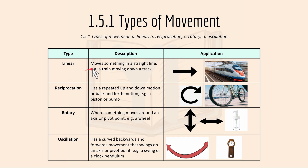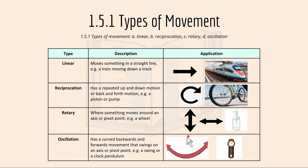For linear movement, something moves in a straight line like a train moving down the track. Reciprocation is a repeated up and down or back and forth motion. Rotary is where something moves around an axis or pivot point like a wheel. And oscillation is where something has a curved backwards and forwards movement that swings on an axis or pivot point, like a swing or a clock pendulum.